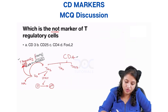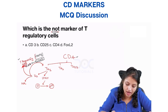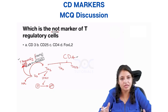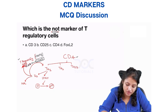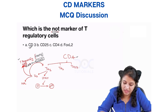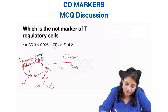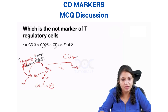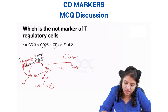So which is not a marker of T regulatory cell? The pan T cell marker is CD3 — any T cell will have CD3. T regulatory cells are a subset of CD4 cells, so they are positive for CD4. They will be positive for CD25 and positive for FOXP3. So what is here? This is FOXL2, which is wrong.